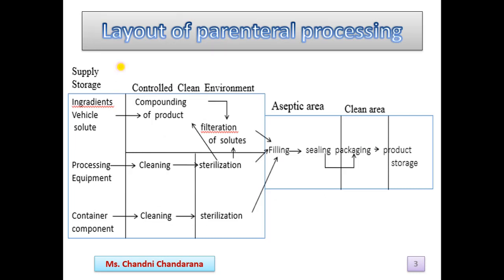This is the layout of parenteral processing. Here there is a supply storage where ingredients, vehicle, or solute come into the controlled clean environment. This is the compounding of the product. After that, there is filtration of the solute. Then it comes to the aseptic area, where there is a filling and sealing process. After that, it comes to the packaging area, and then to the storage area. This is how the aseptic processing is done and how our product is manufactured.